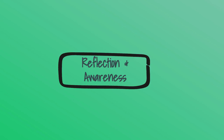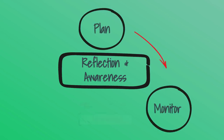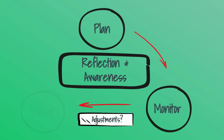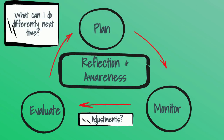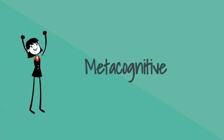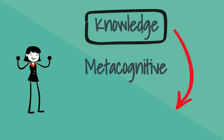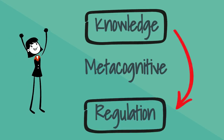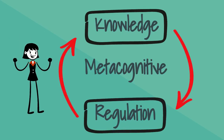During our last episode, Jen learned that there were three phases to metacognition: the planning phase, the monitoring phase, and the evaluation phase. In order to complete the phases of metacognition effectively and efficiently, Jen would need to display metacognitive knowledge and metacognitive regulation.